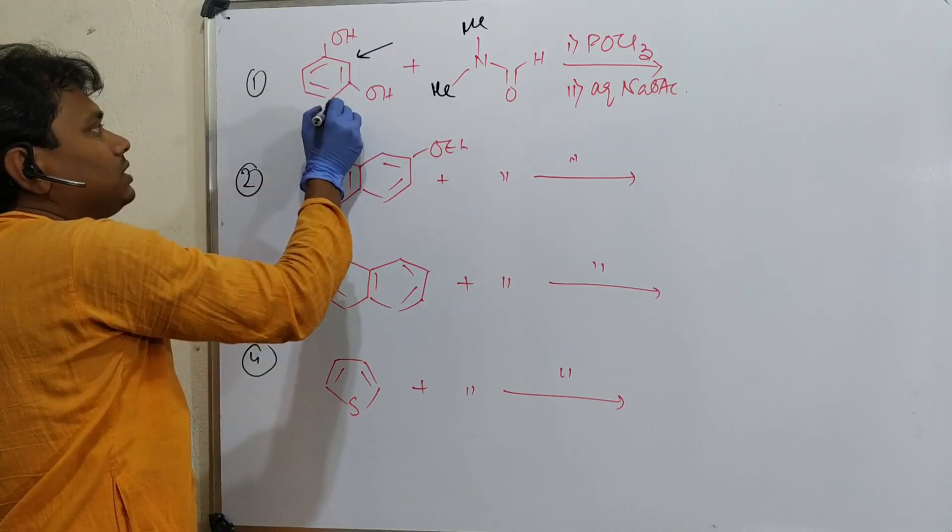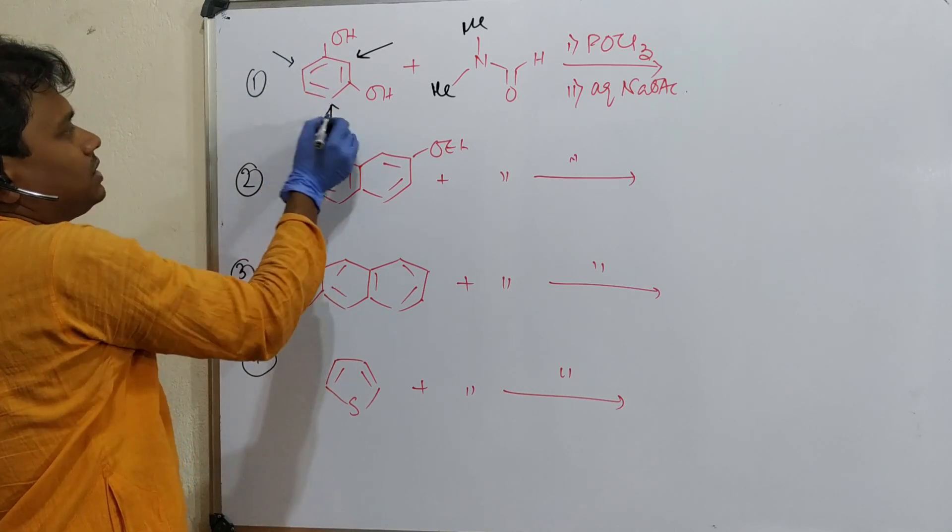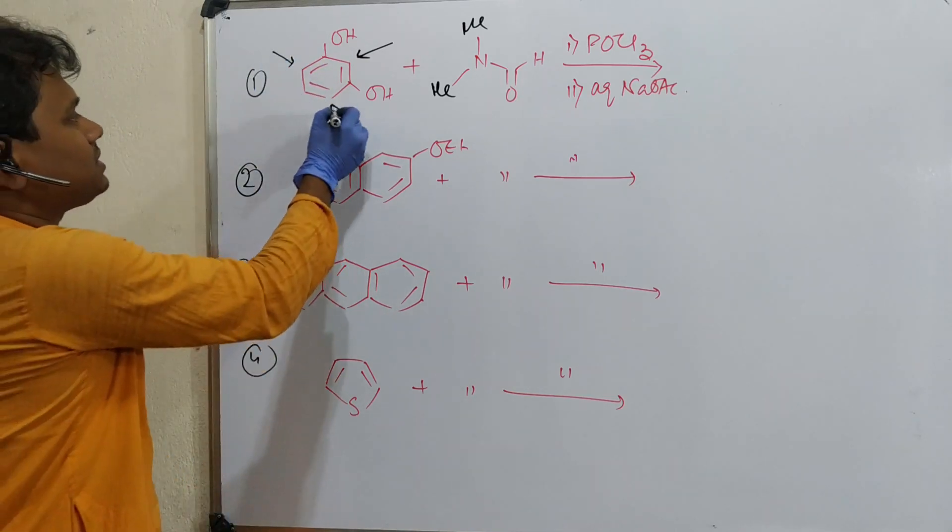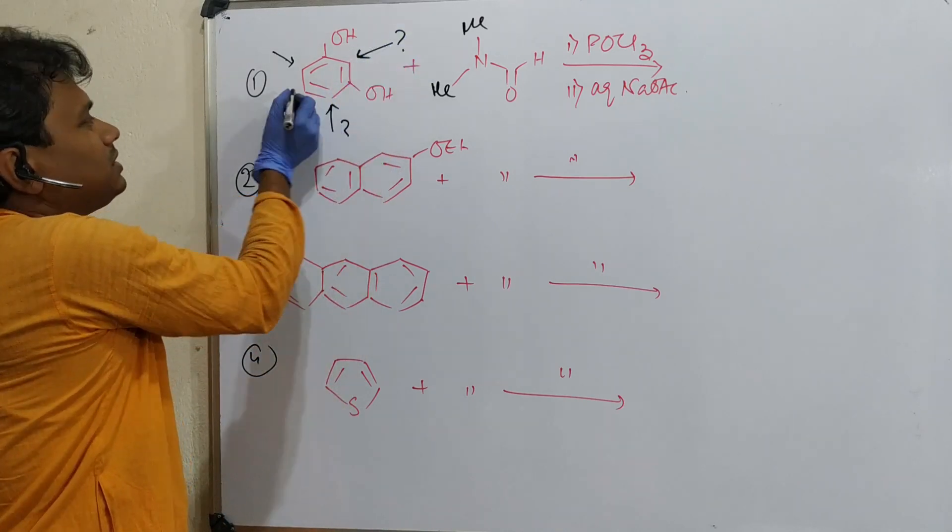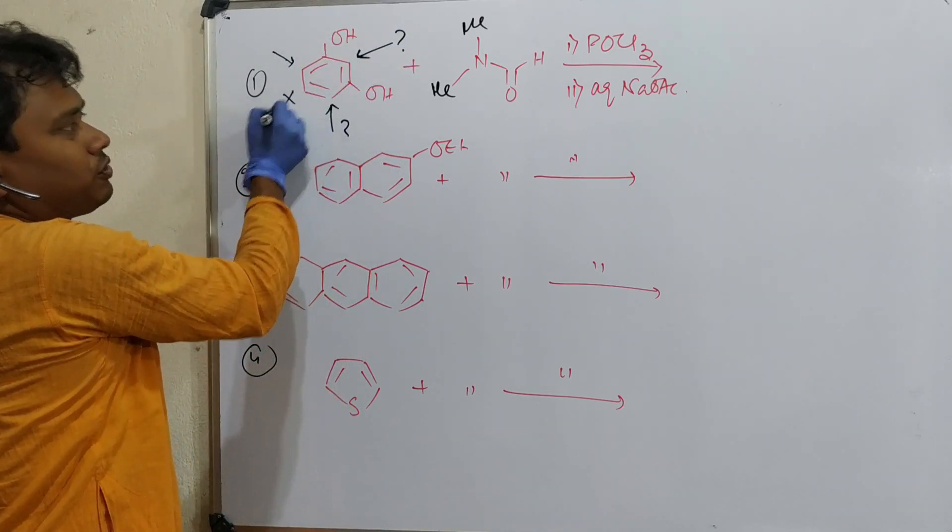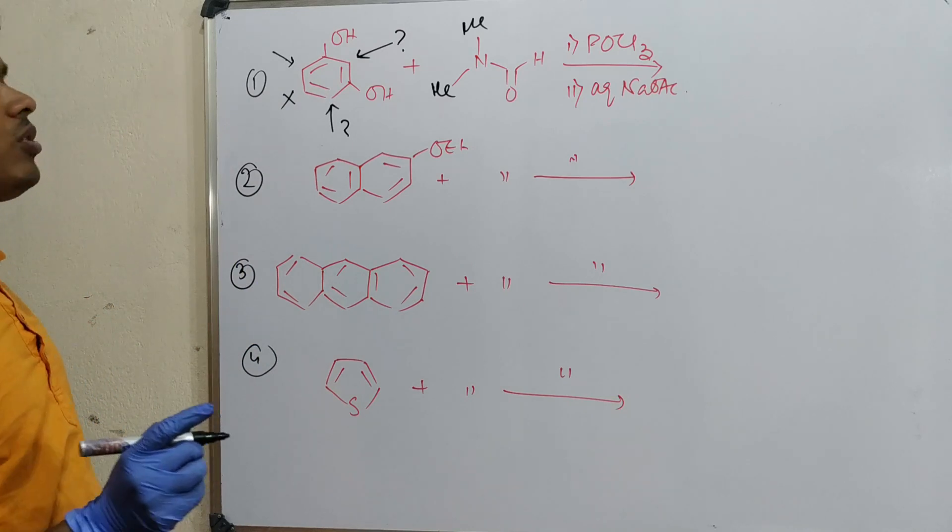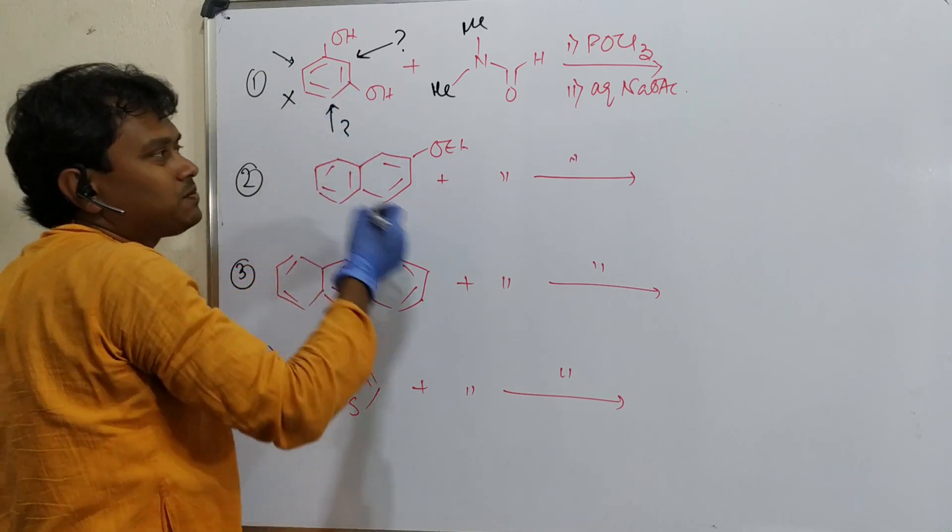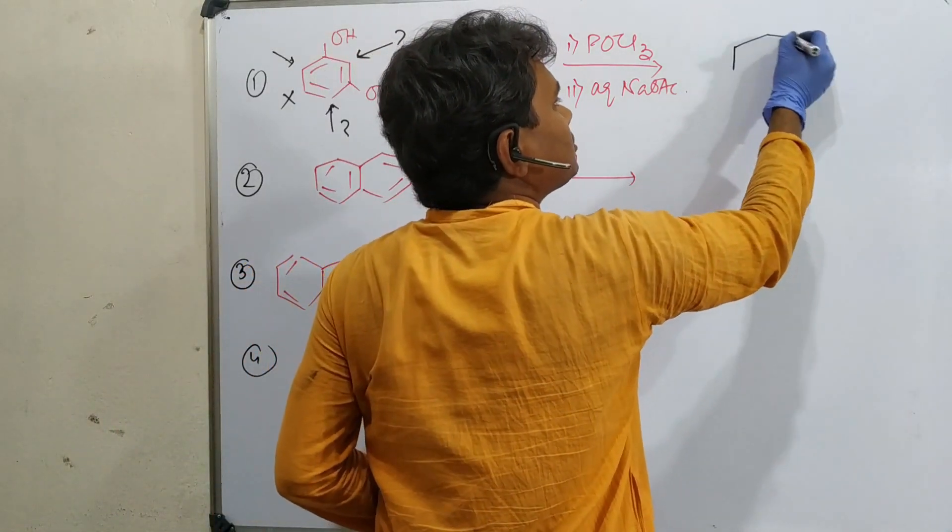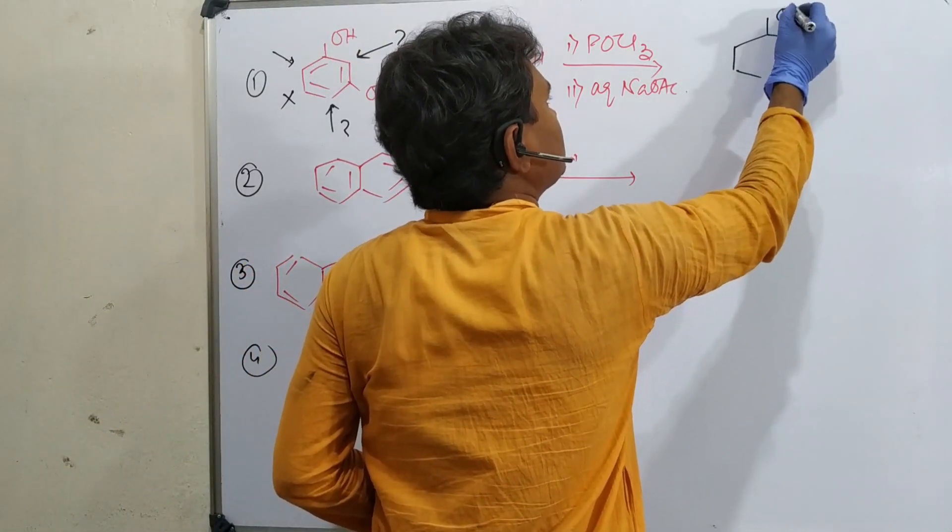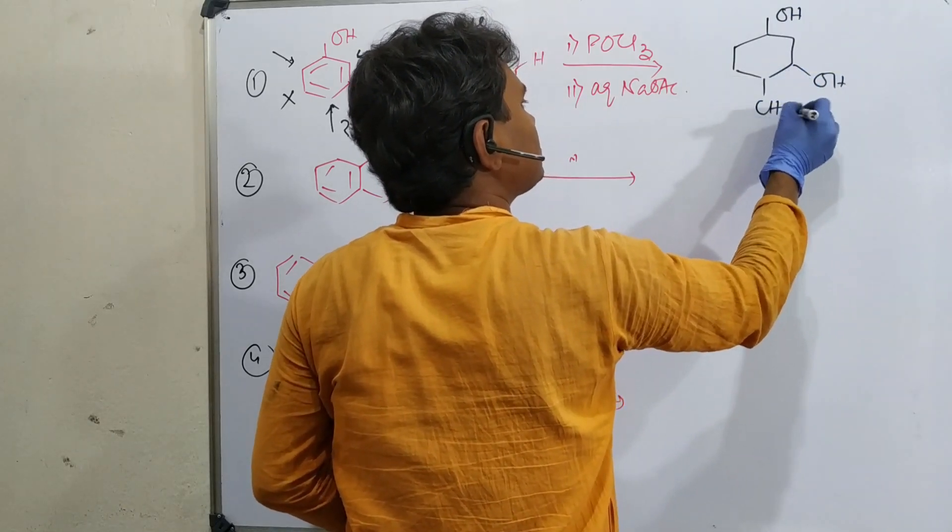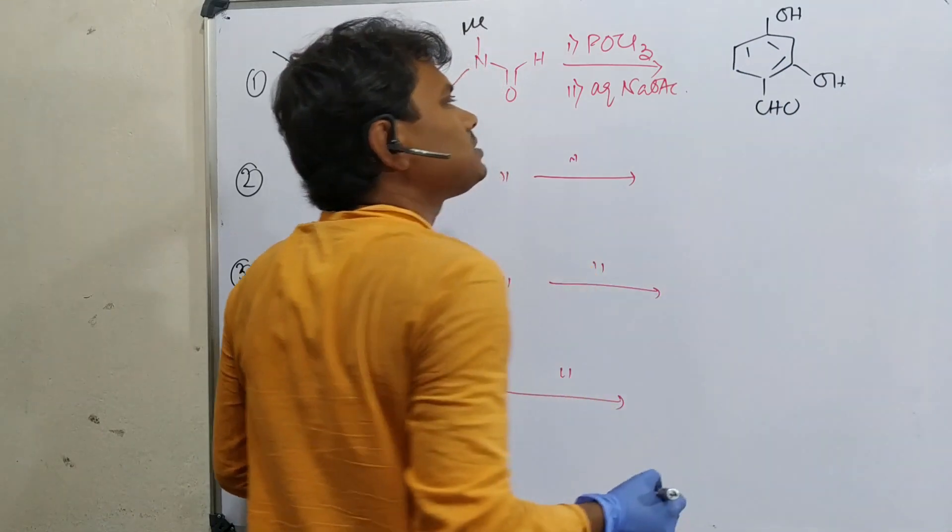These two positions are equivalent with respect to both groups, so won't happen at meta. We know para position or ortho. Para is so open, and here both sides are equivalent. So at this para position, formylation will occur. This is OH group, so CHO forms at para to both OH groups.